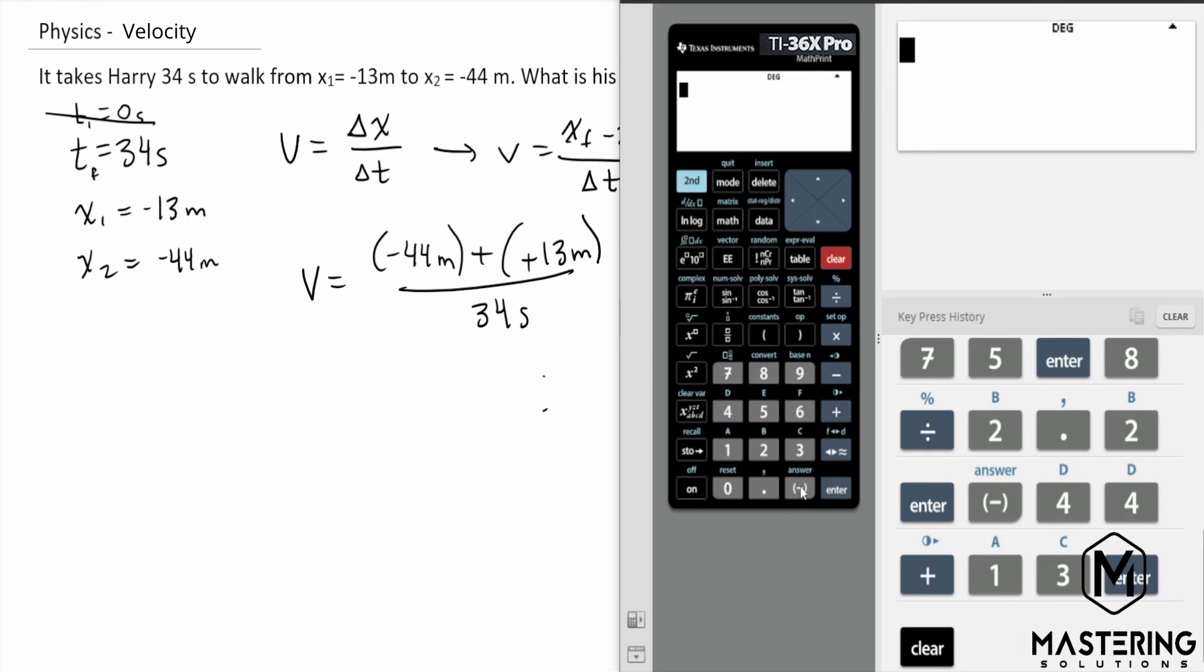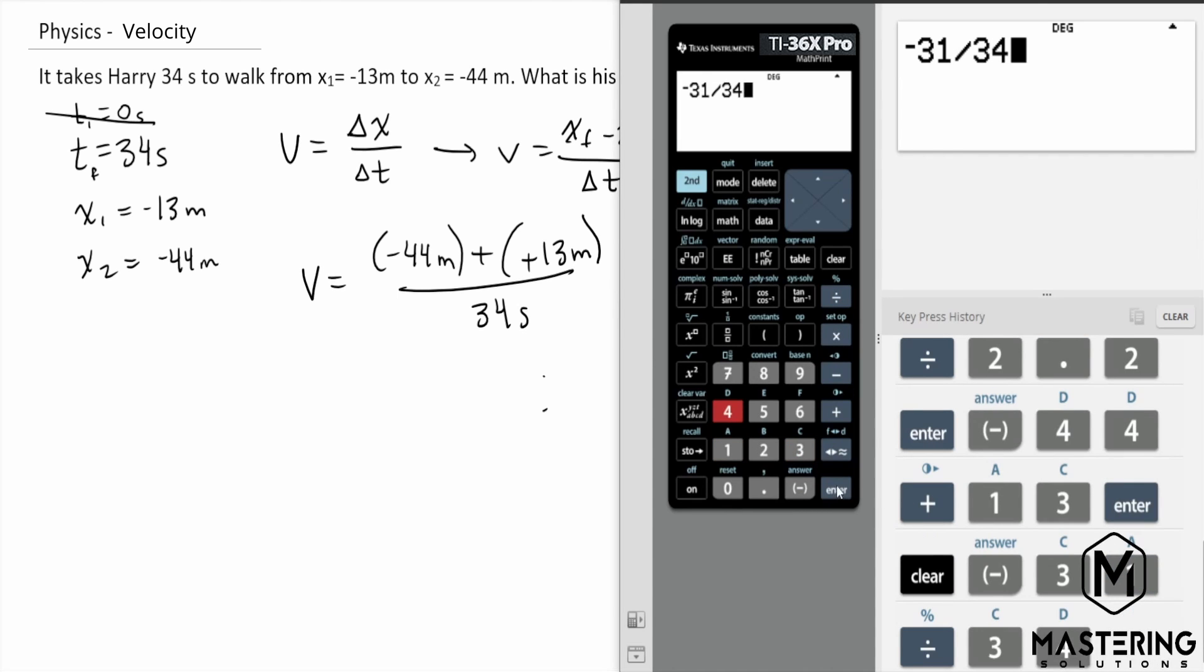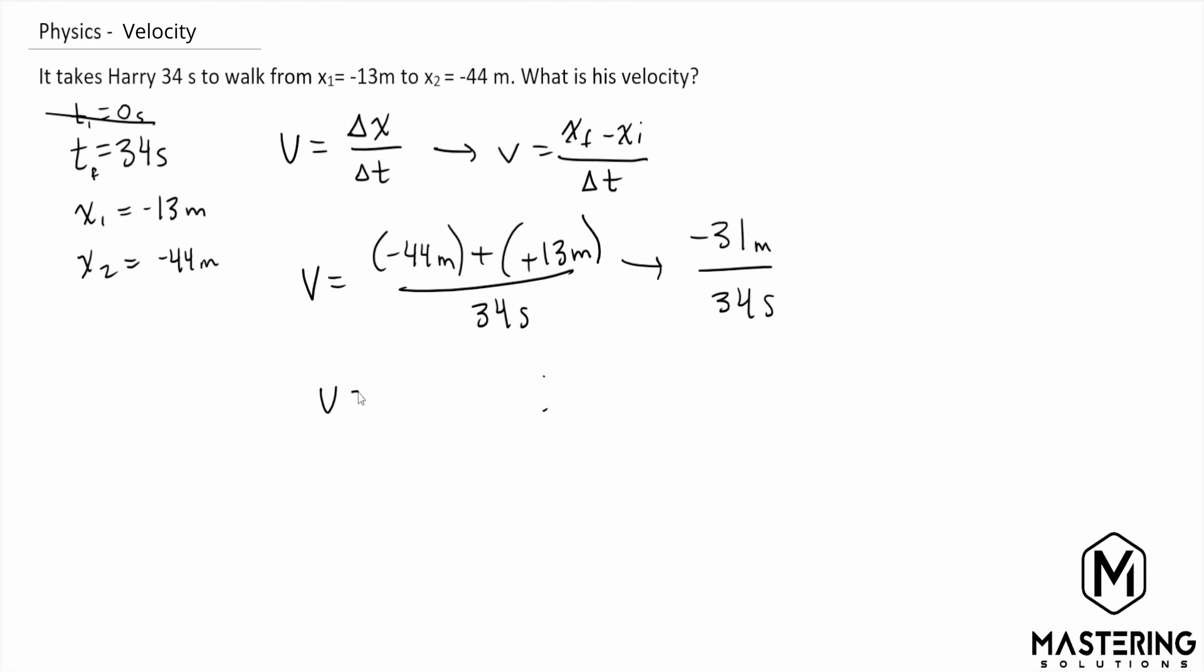So we have negative 31 divided by 34, so the velocity is negative 0.91 meters per second.